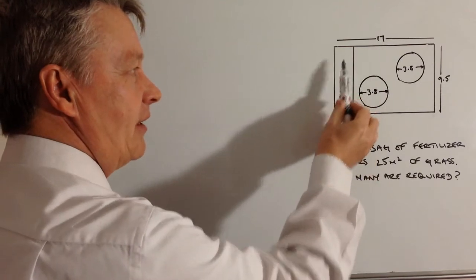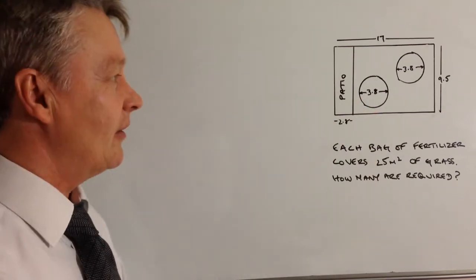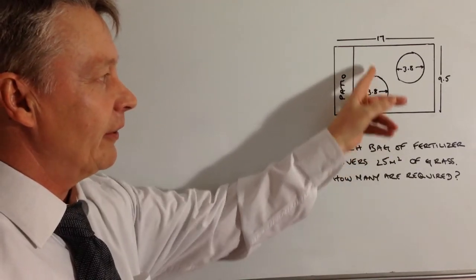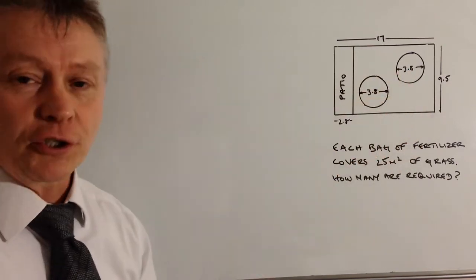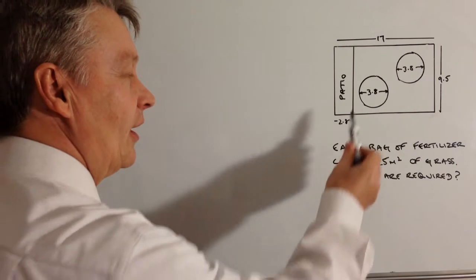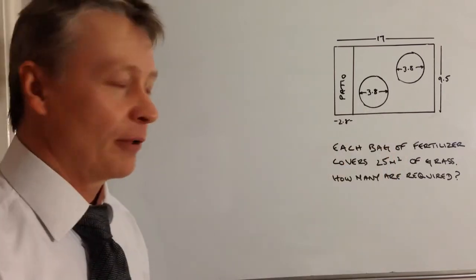It's 17 metres by 9.5 metres and this garden's split up into three areas. The first area is a patio, which is like a concrete patio. The second area is the grass, which is this area here and then it's also got two ponds in it as well, which have diameters of 3.8 metres.